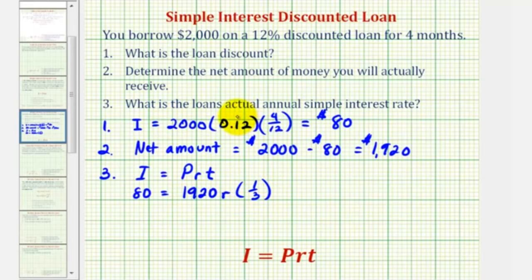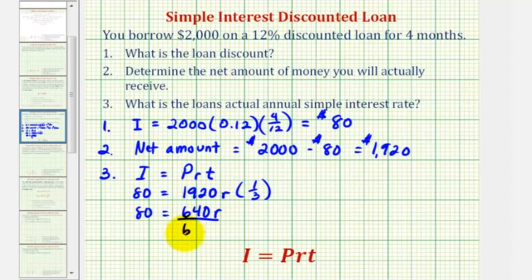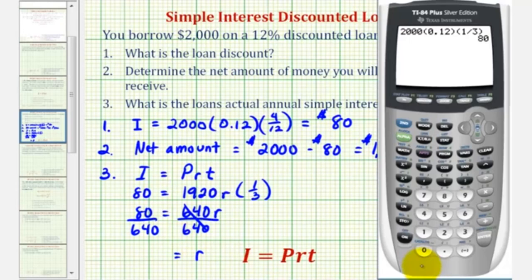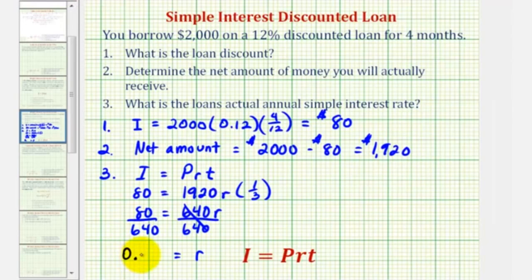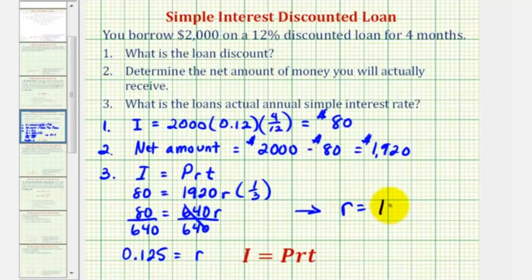Solving for R, one thousand nine hundred twenty times one third equals six hundred forty, so we have 80 = 640R. Dividing both sides by six hundred forty gives R = 80 ÷ 640 = 0.125. Multiplying by one hundred converts this to a percentage, so the actual annual simple interest rate paid for this discounted loan is twelve point five percent.